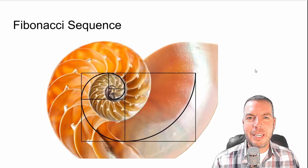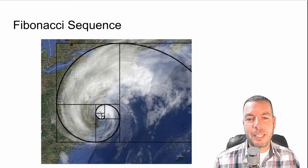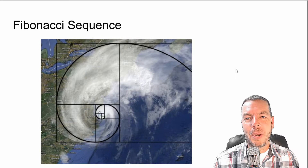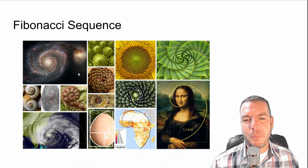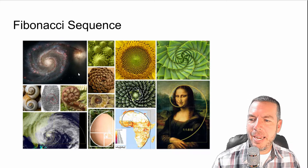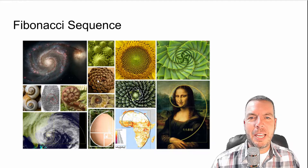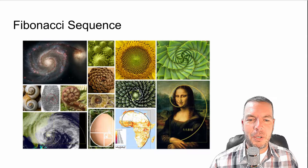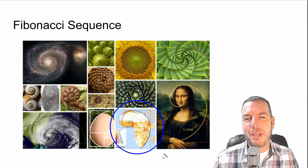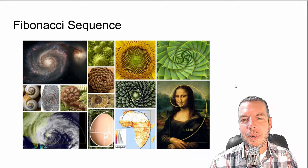The Fibonacci sequence can be seen all through nature — seashells, plant life, even hurricanes. You can see that golden ratio Fibonacci sequence right there in a hurricane. It's in everything: the galaxy, trees, pine cones, shells, fingers, even fingerprints. It's everywhere, even in some art. Even a continent has that Fibonacci sequence look to it. Lots of interesting things go into this Fibonacci.